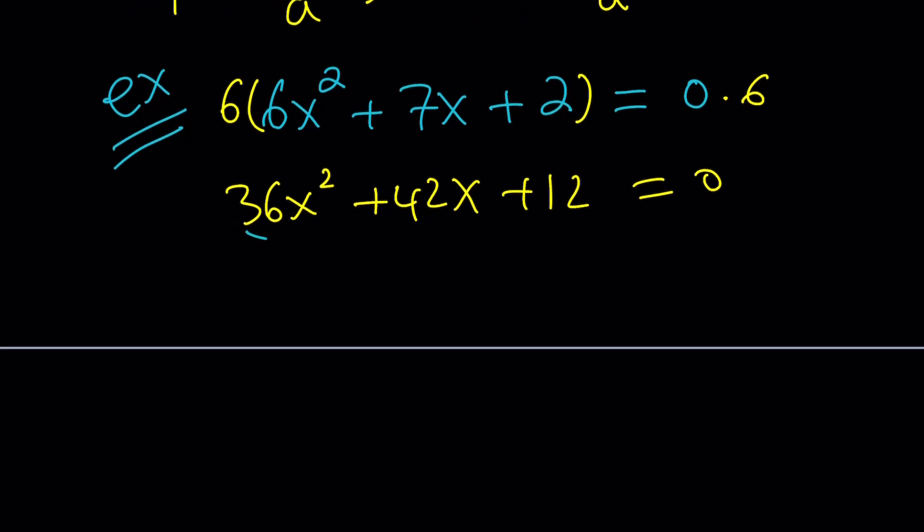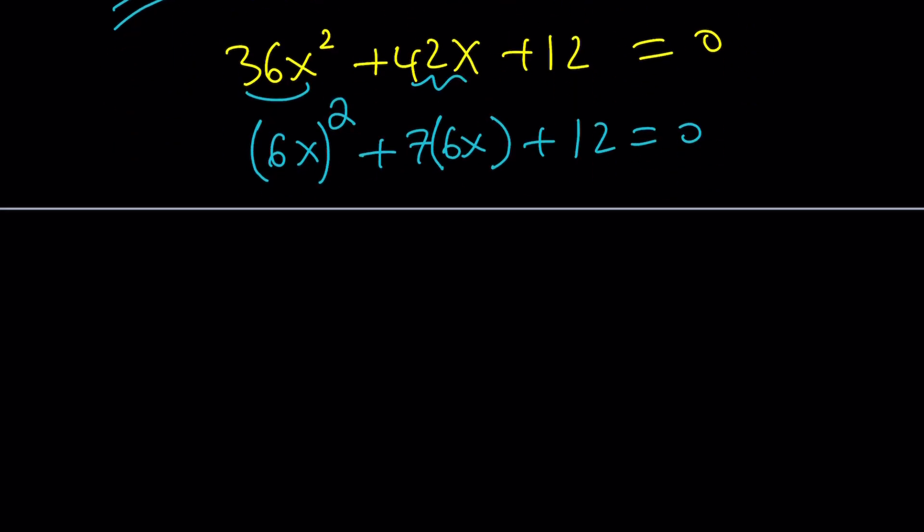We're going to get 36x squared plus 42x plus 12 equals 0. You might be thinking, didn't you make the equation more complicated? Yes and no, because we're about to simplify this. Ready, set, go. Now, remember, this expression is a perfect square, so I can write it as 6x quantity squared. And obviously, I can extract 6x from here. That will be 7 times that plus 12. Awesome. Now, here's the awesomest part of this.